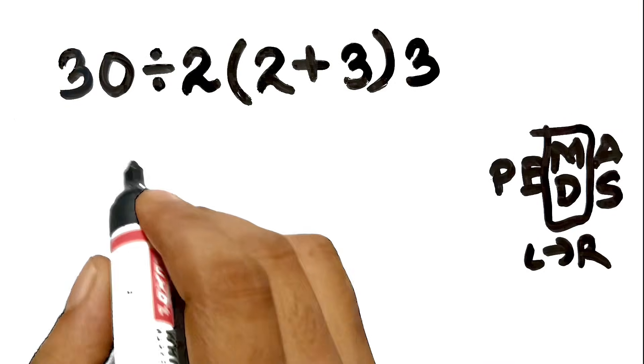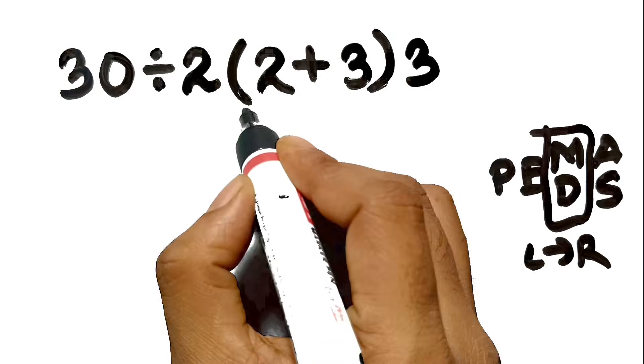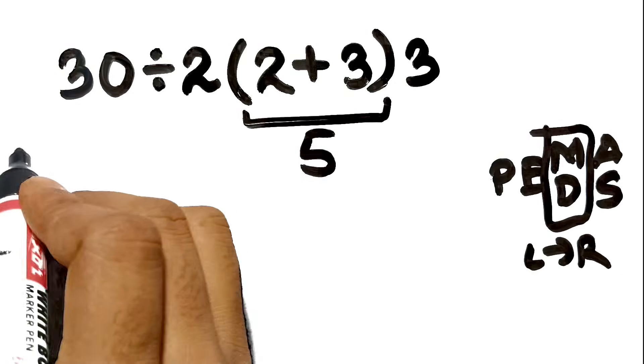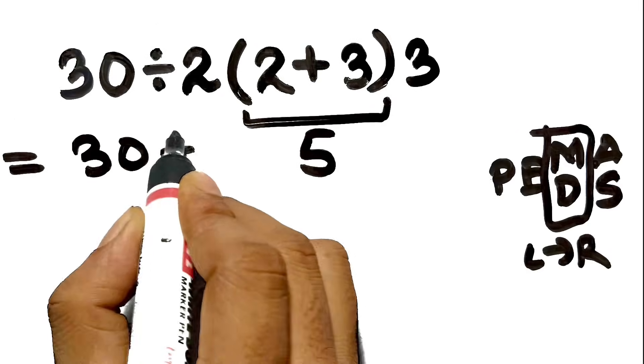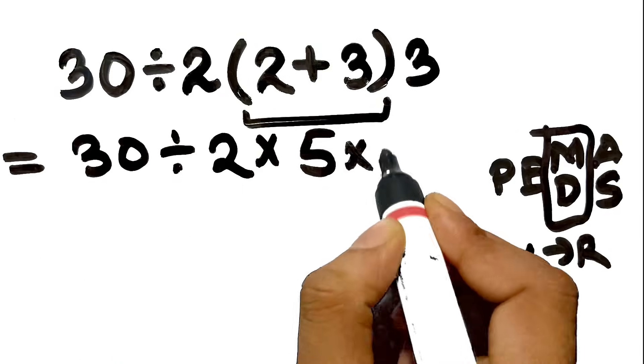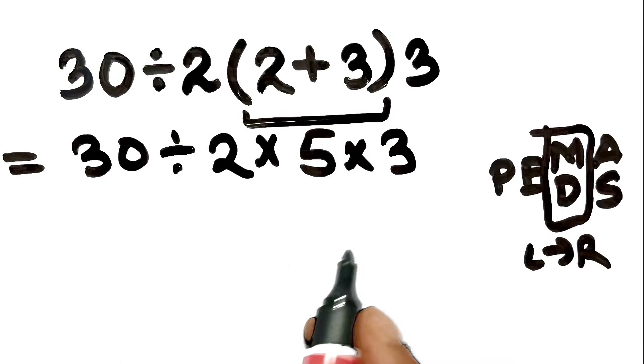So, let's follow the path correctly. First, two plus three becomes five. Now the expression reads, 30 divided by two multiplied by five multiplied by three. We start at the far left.